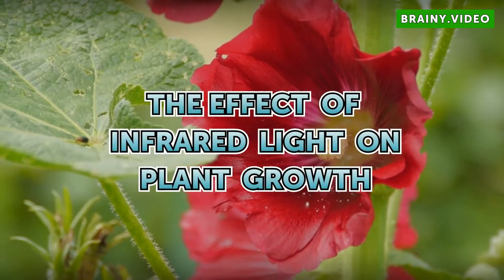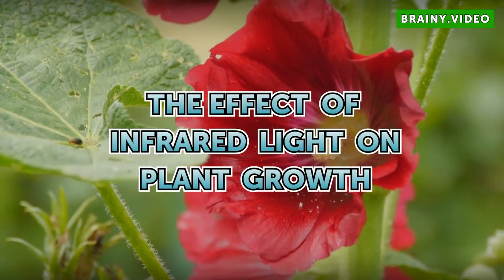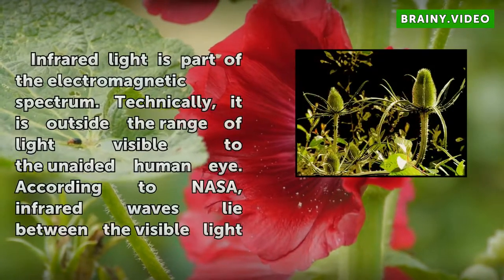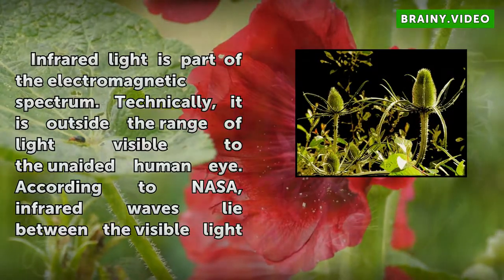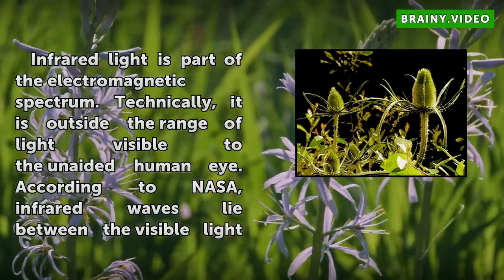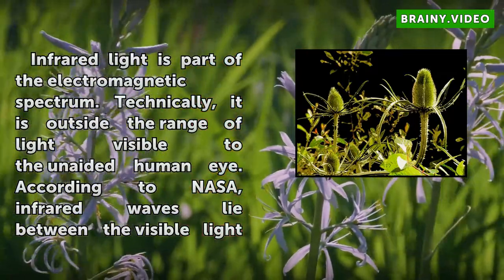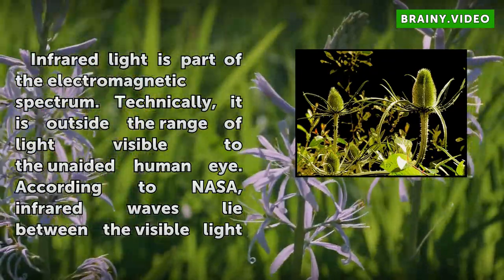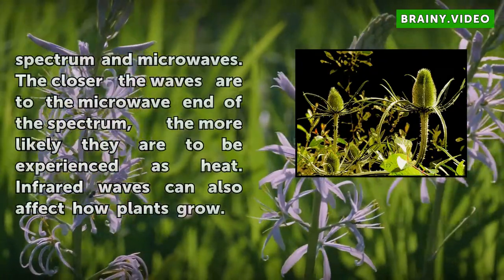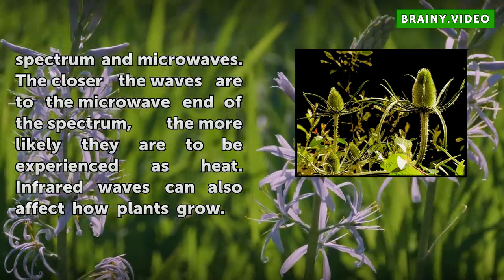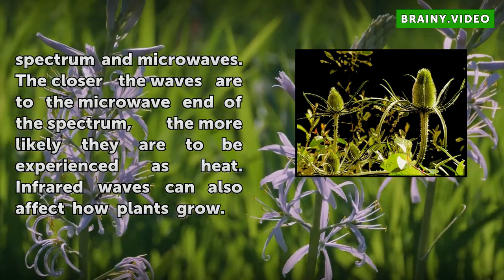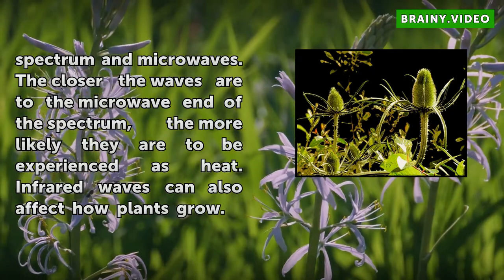The Effect of Infrared Light on Plant Growth. Infrared light is part of the electromagnetic spectrum. Technically, it is outside the range of light visible to the unaided human eye. According to NASA, infrared waves lie between the visible light spectrum and microwaves. The closer the waves are to the microwave end of the spectrum, the more likely they are to be experienced as heat.